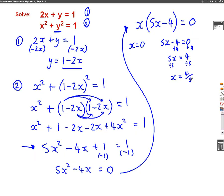So my two answers for x are x equals 0 and x equals 4 over 5. So I'm halfway there now because I still need to find my y answers.